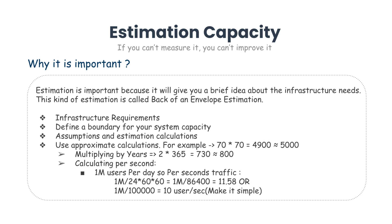One more thing to point out: we are not attempting a mathematics exam, so we don't need to be completely correct in calculations. Try to round off the numbers — for example, 70 x 70 is 4,900 but to calculate quickly we can make it 5,000. If you need to multiply by 2 years, then instead of 730 days you can make it 800 days. Just make calculations simple with approximation.